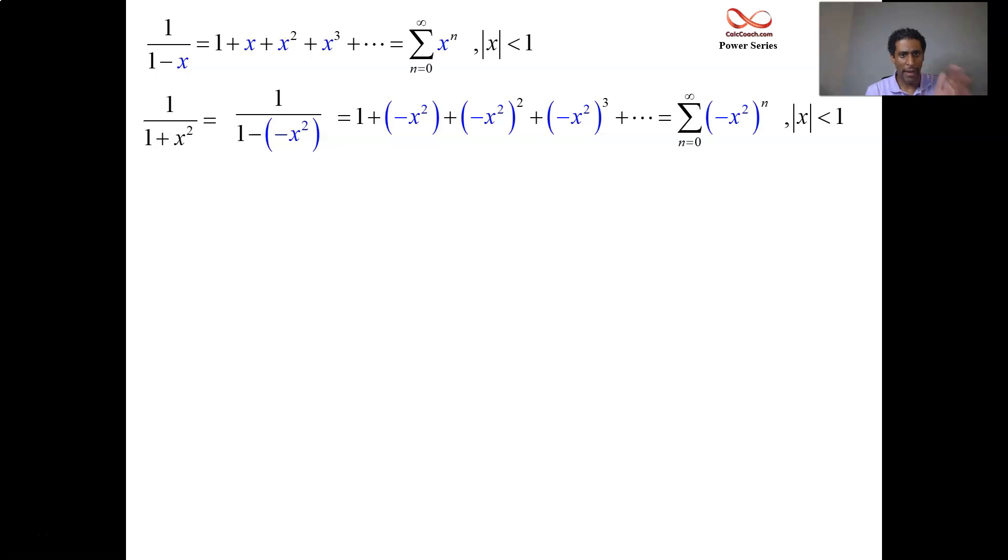Simplifying, what we have is 1 minus x squared plus x fourth minus x sixth and so on. With the summation, we can break it apart and have the alternating term minus 1 to the n and then the x term x to the 2n. This is the power series for 1 over 1 plus x squared. Not worthy of getting its own place on the list, but this guy's integral is worthy of making the list.